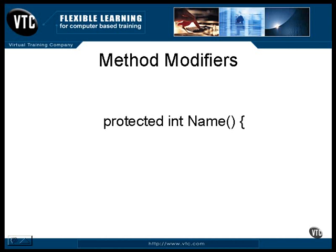There are a few other modifiers for methods. A static method is also known as a class method. A static method resides in memory in the class definition, not in each object. It can be called from any other method in the class, static or not. One thing about a static method: it cannot directly access data that is not also static. If you reference a dynamic data item from inside a static method, it has no way of knowing which object you're talking about that contains the data.